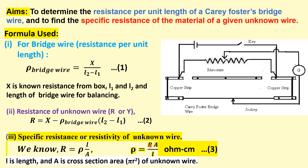Finally, we can calculate R because we already know the known resistance Rho, and we have measured L2 and L1. Now, if we know R, we can find the specific resistance or resistivity: Rho equal to R into A by L, with units of ohm centimeter, where A is the cross-sectional area of the unknown wire, that is pi R squared, L is the length, and the radius R can be measured using a screw gauge or micrometer.